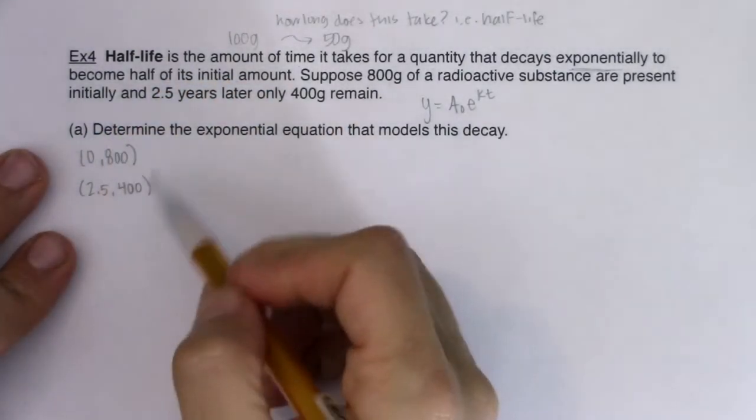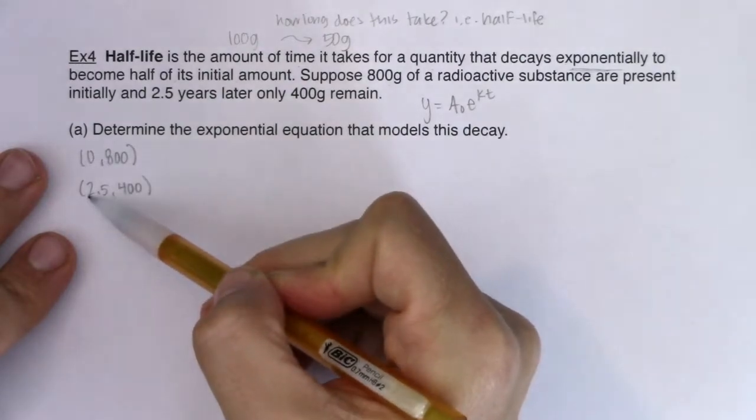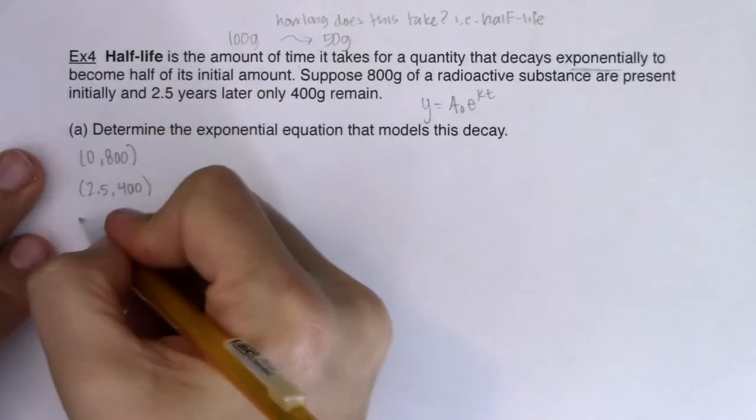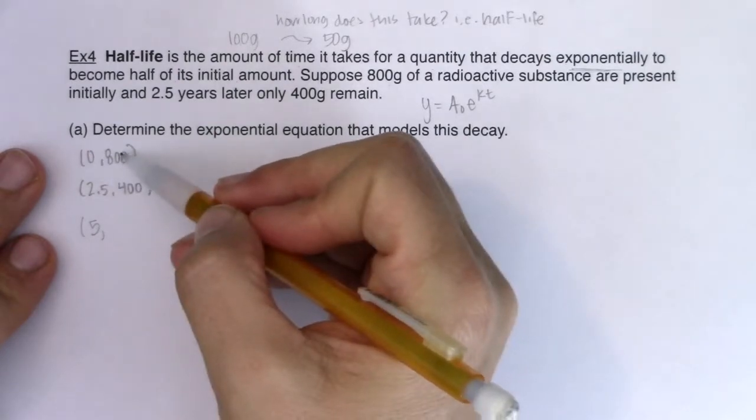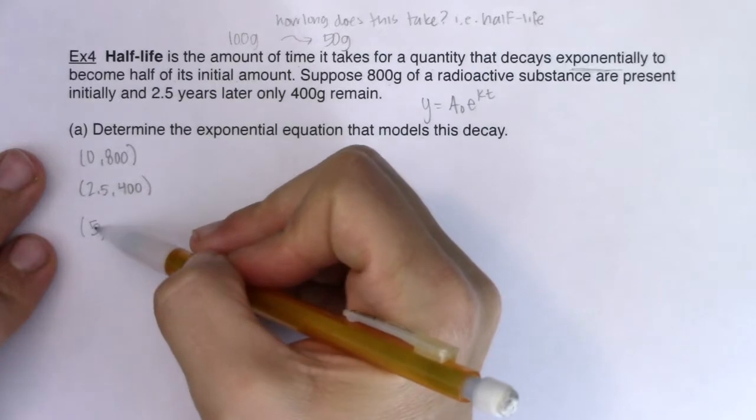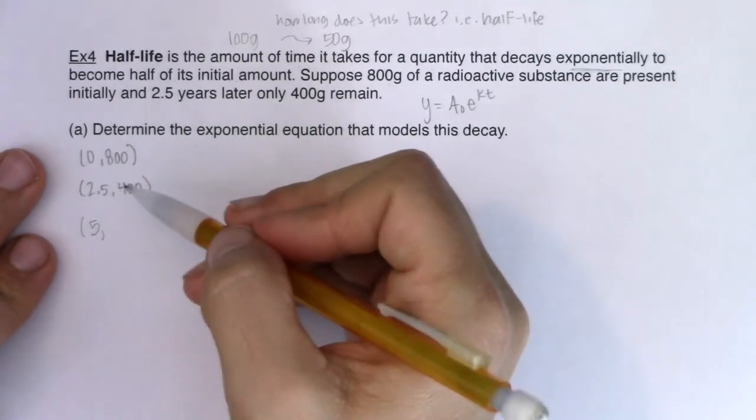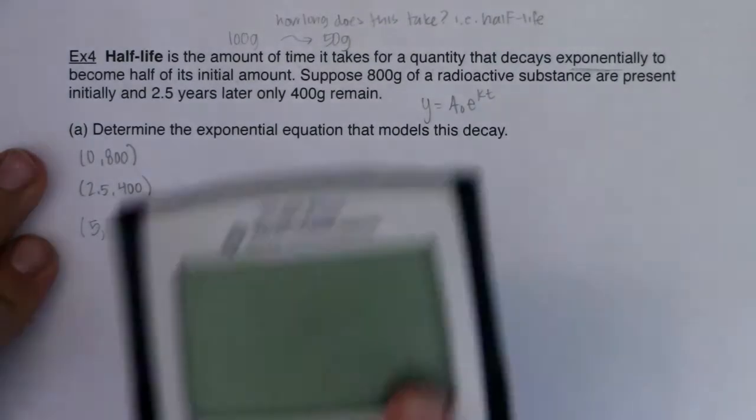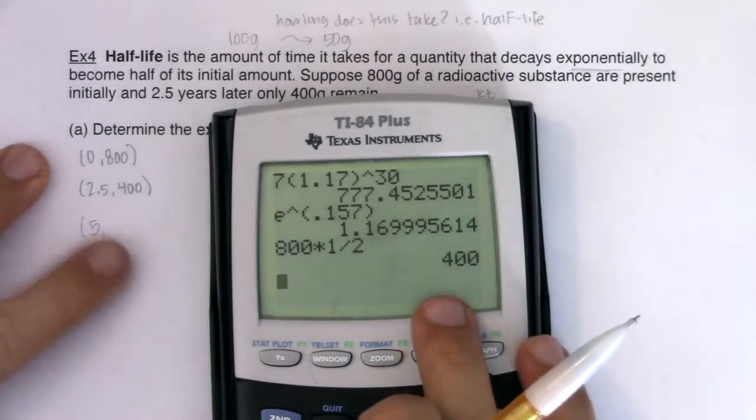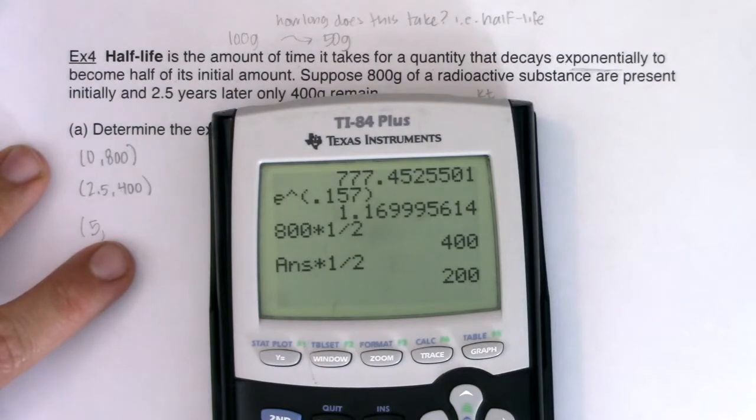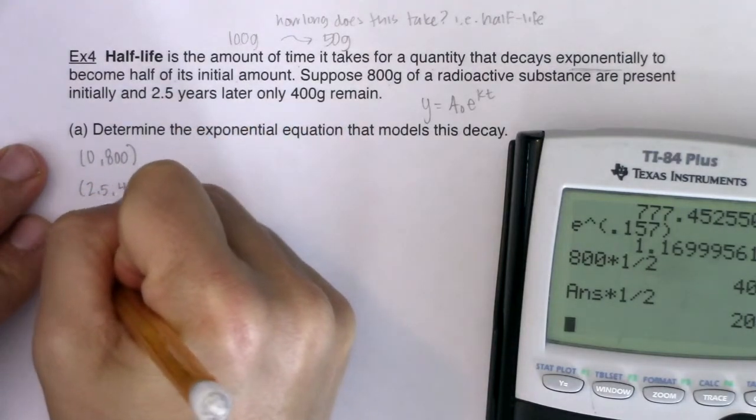Before we go on, I want to show you how you could get more ordered pairs. Half-life definitely has a pattern. It took two and a half years to get to half of what I initially had. So think about what happens at five years. From zero to two and a half, I went from 800 to 400. So if I span another two and a half years, how much will I have left? Some people think zero, but that's not how it works. This isn't linear decay, this is exponential decay. I took 800 and multiplied it by one-half, so this would be 200.